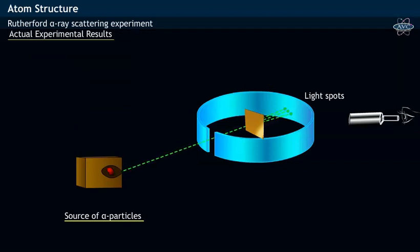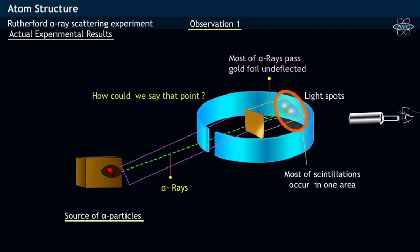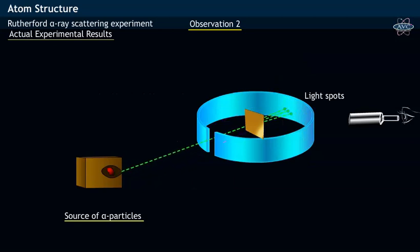But the actual experiment showed different results. Rutherford, in his experiment, observed that most of the alpha rays pass through the gold foil without any deflection or slight deflection. This can be known from the fact that most of the light flashes or scintillations were noticed across only one region on zinc sulphide screen along the straight path of alpha rays.